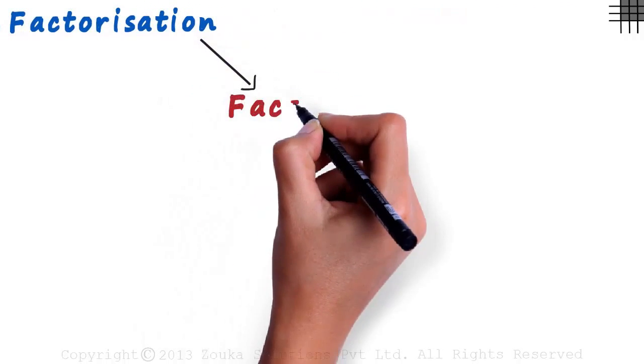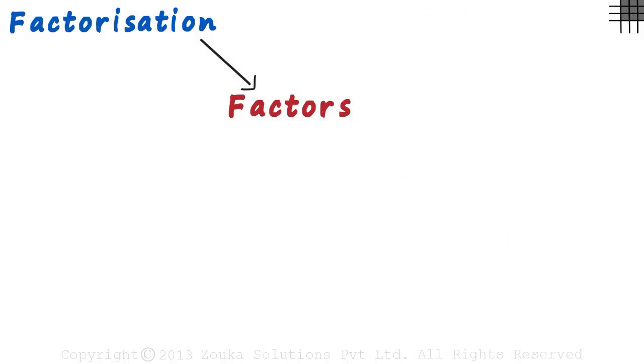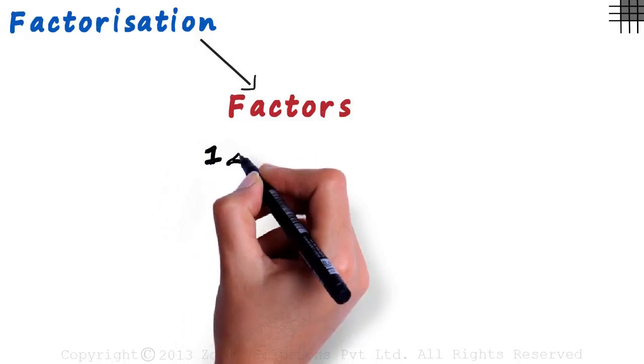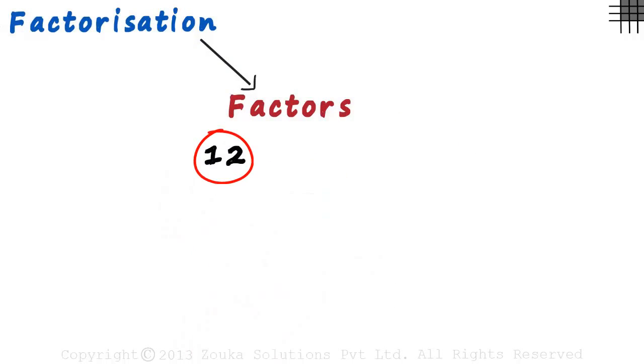Let us understand factors first. Consider a random number, say 12. To get its factors, we just need to write 12 as a product of two numbers in all the possible ways.